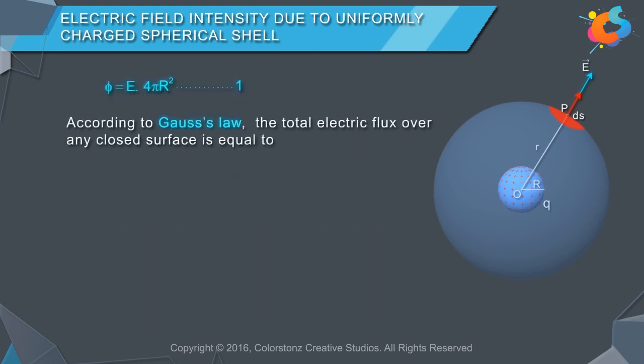According to Gauss's law, the total electric flux over any closed surface is equal to 1/ε₀ times the total charge enclosed by the surface. φ = Q/ε₀.